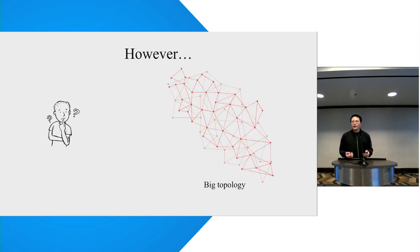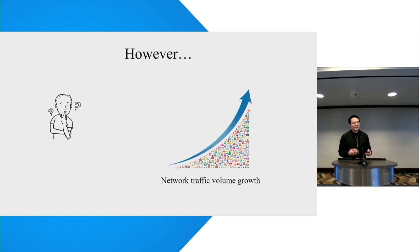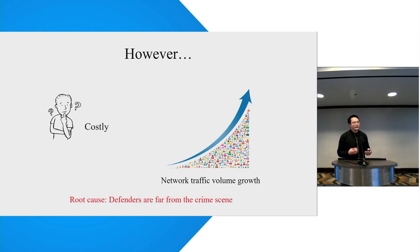However, in real-world networks, there are many challenges. First, the network is bigger and bigger, so it's time-consuming to find the exact cause and location — sometimes it can take several hours. Besides, the growing traffic volume makes it more costly to collect network state. The root cause is that defenders are usually far away from the crime scene, so they need to spend a lot of time and resources to collect network state from the data plane.